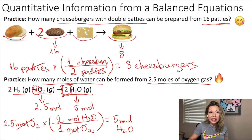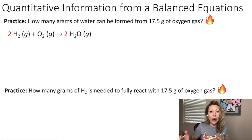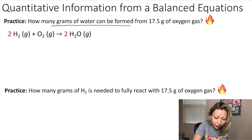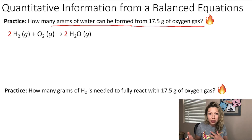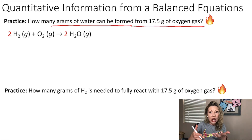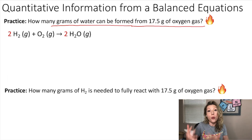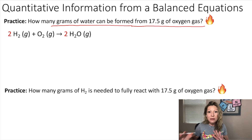Let's do a little bit more of these using grams. In our question, we have to figure out how many grams of water can be formed from 17.5 grams of oxygen gas. In order to figure out the grams of water, I have to take the grams of oxygen gas, convert it into moles using the molar mass, then use the mole ratio from the reaction to convert into moles of water, and from moles of water get to grams of water.